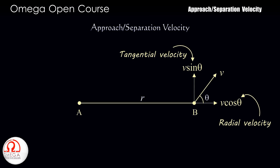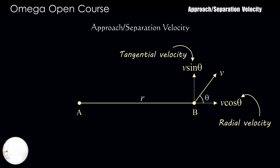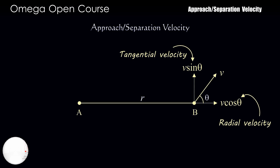Whatever distance changes between A and B is only due to the radial component of velocity. There is no contribution to the change in separation between the two particles due to the tangential component. Therefore, the rate of separation — or separation velocity — in this case is given by the radial component, that is V cos theta.